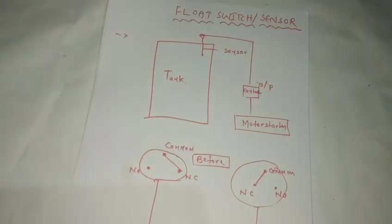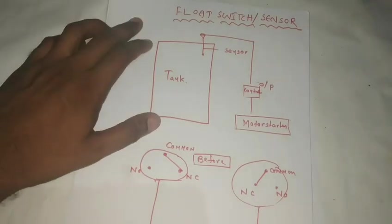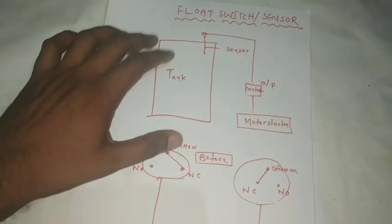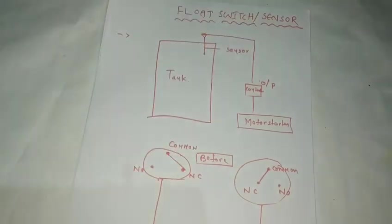We have to use this process. We can use the process like this — we use a sensor for a process. What are the sensors for water level control or oil control? If we use a Floor Switch, we use the Floor Switch.